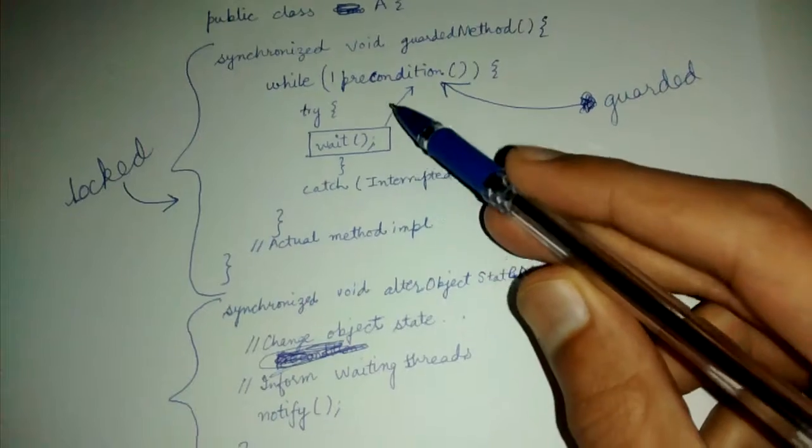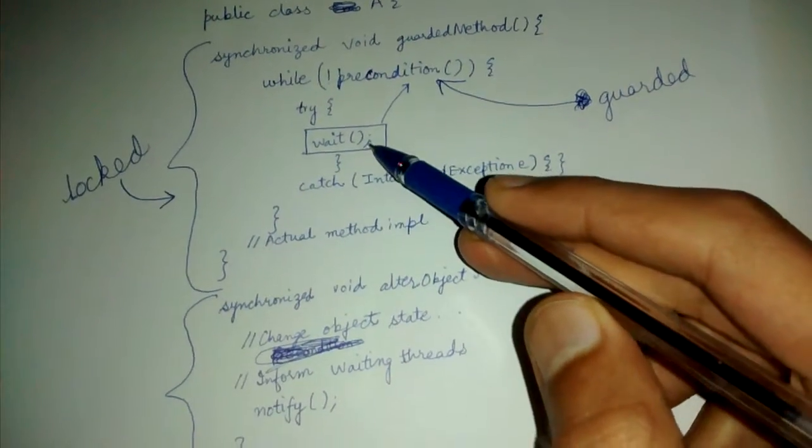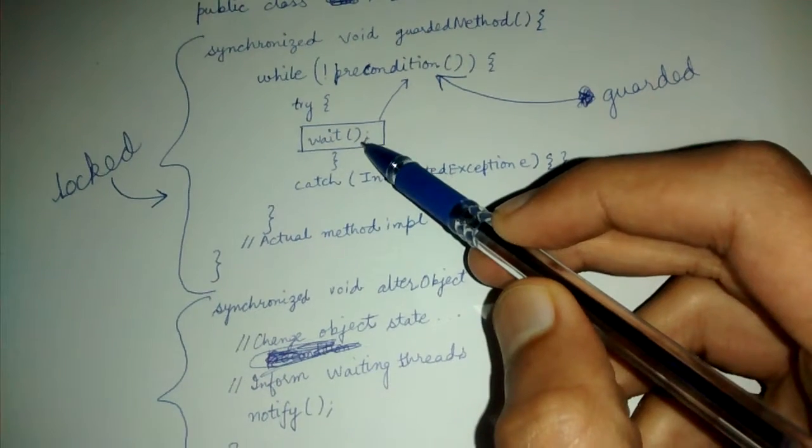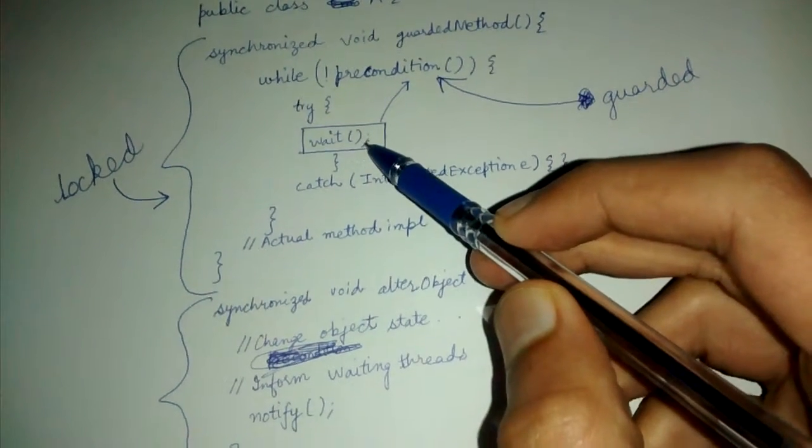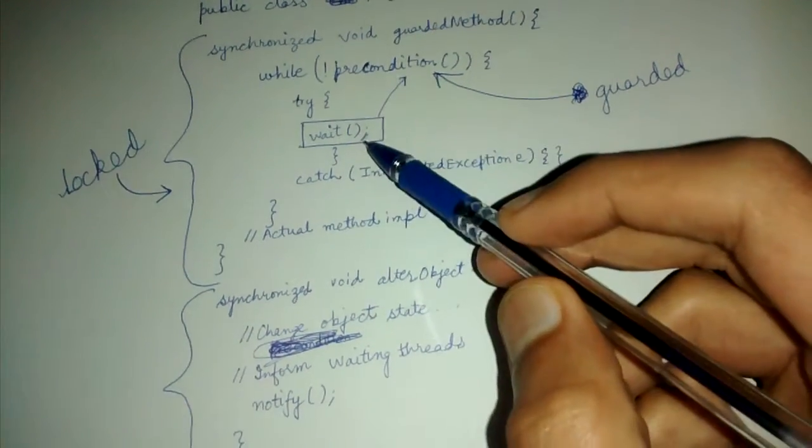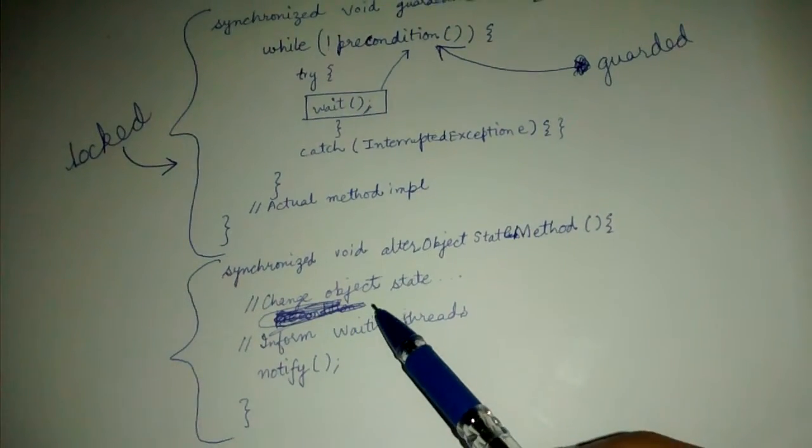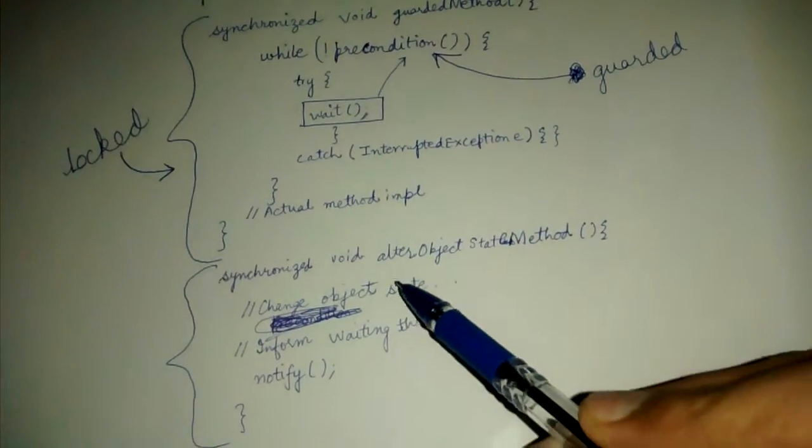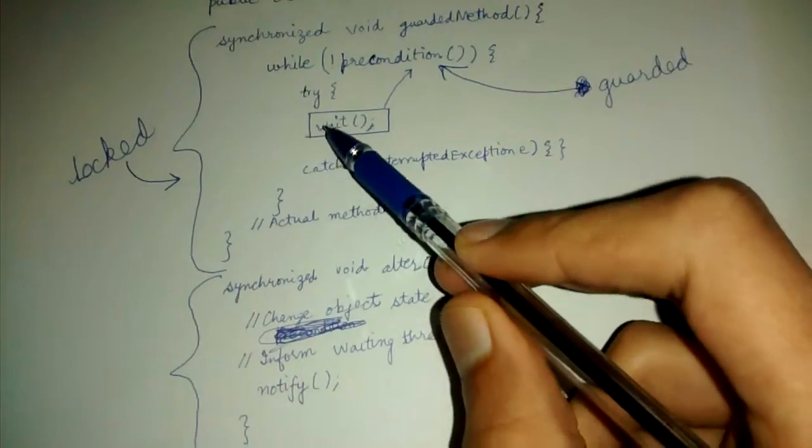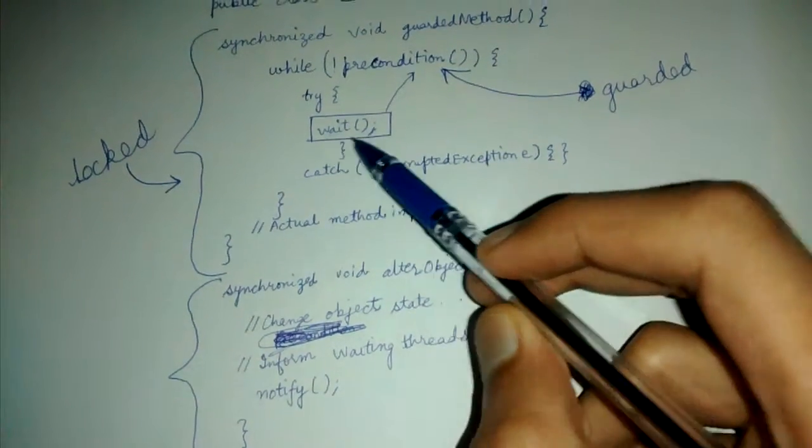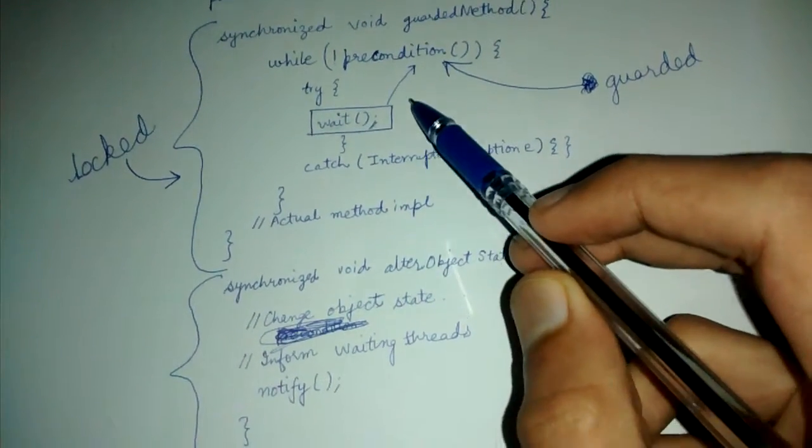So let's say this has been called, then this cannot be called. This has to wait until this finishes, unless you explicitly ask this method to wait. So if you write wait, then you are releasing your lock and you are giving chance to this method to run.